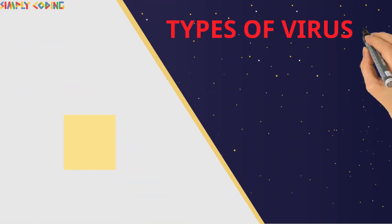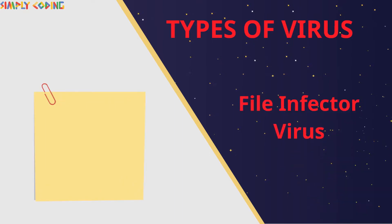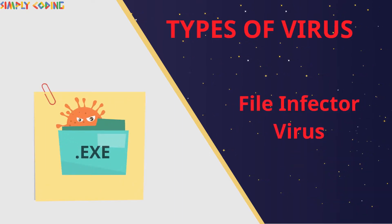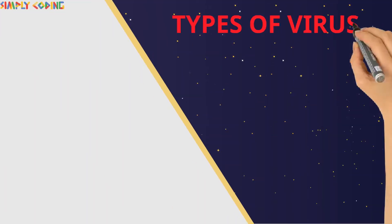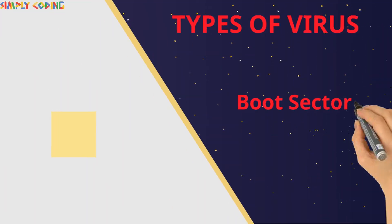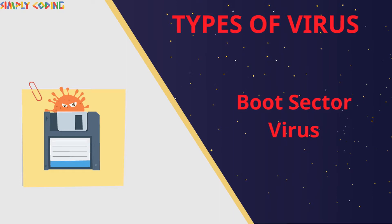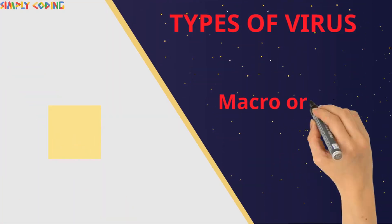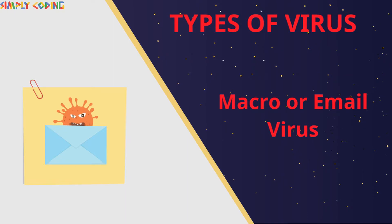There are basically three types of viruses. File sector viruses reside in binary executable files such as .exe files. Boot sector viruses install themselves in the boot sector or the master boot record. Macro or email viruses install themselves in documents or emails.